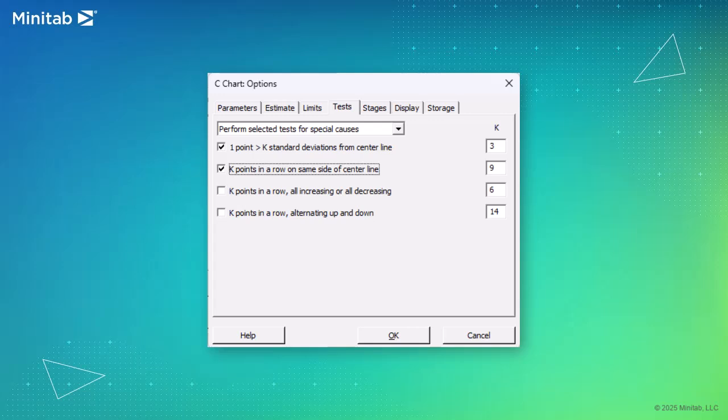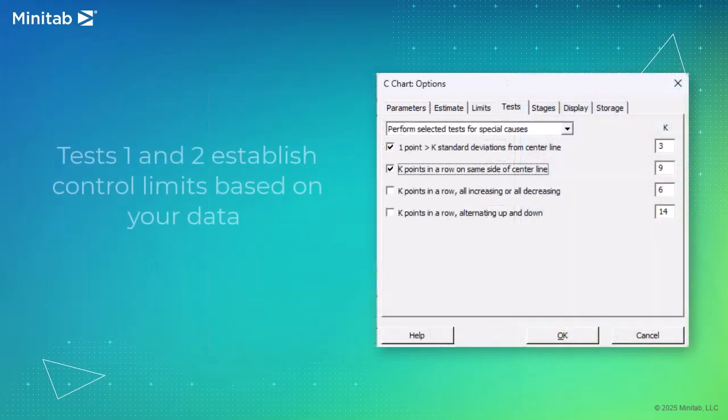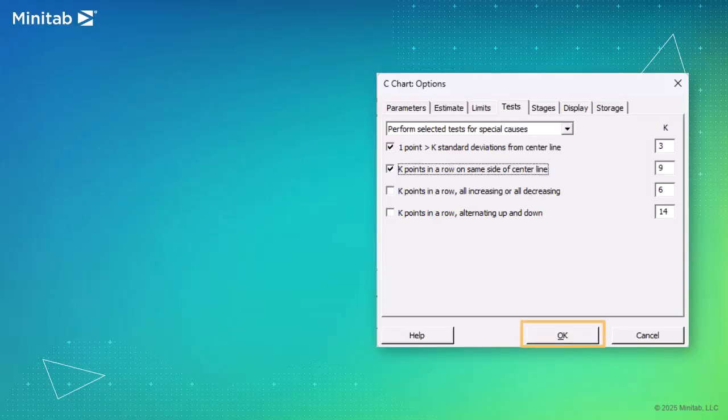In this case, you're not sure which tests apply. So, use Tests 1 and 2 to first establish the control limits based on your data. Select OK in each dialog.